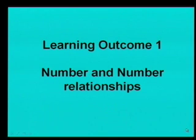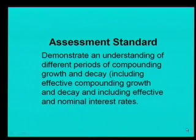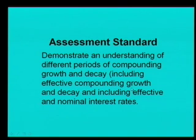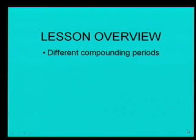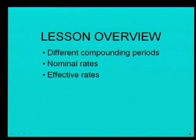Let's start by looking at the learning outcomes and assessment standard for this lesson. It will be Learning Outcome One: Numbers and Number Relationships. The assessment standard requires you to demonstrate an understanding of the different periods of compounding, growth and decay, and include effective and nominal interest rates. Now let's look at the lesson overview: we are going to look at different compounding periods, nominal rates, and effective rates. Watch out for the difference between the two rates — it is a tiny but important difference.